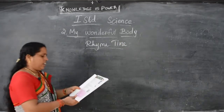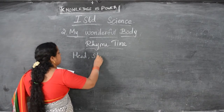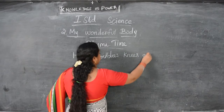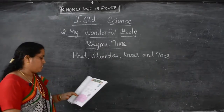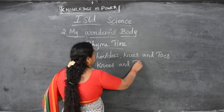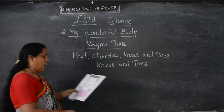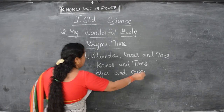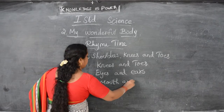First line — head, shoulders, knees and toes, knees and toes. Head, shoulders, knees and toes, knees and toes. Eyes and ears, eyes and ears, mouth and nose, mouth and nose.